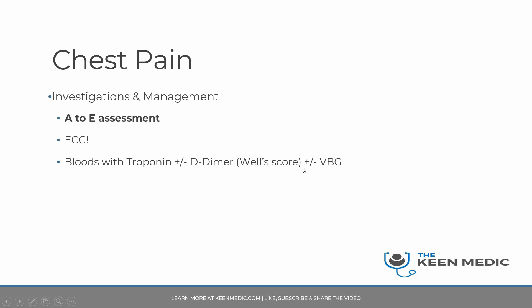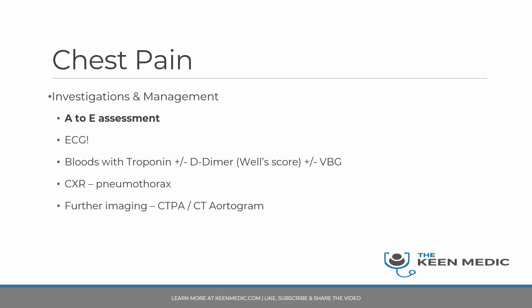You would use a Wells score for pulmonary embolism — be mindful that the Wells score can be used for DVT or pulmonary embolism, so look it up specifically for pulmonary embolism. A venous blood gas and chest X-ray are important for ruling out pneumothorax or infections which can also cause chest pain. Further imaging to consider includes CT pulmonary angiogram (CTPA) to look for pulmonary embolism, or CT aortogram for aortic dissection.